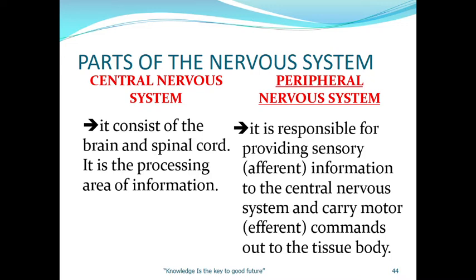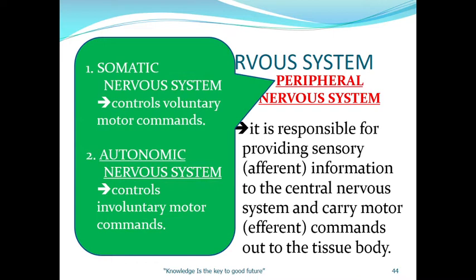So afferent and efferent: afferent is the information that is processed, and the command that you will carry out is efferent. We have two types of peripheral nervous system: somatic and autonomic.